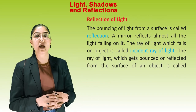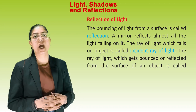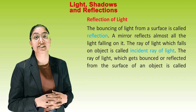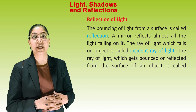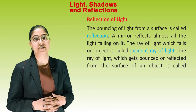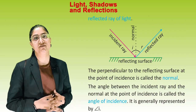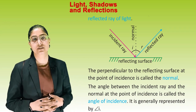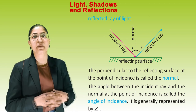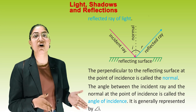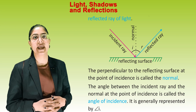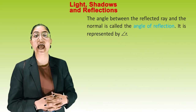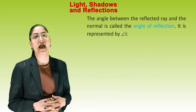Reflection of light. The bouncing of light from a surface is called reflection. A mirror reflects almost all the light falling on it. The ray of light which falls on the object is called the incident ray. The ray which gets bounced or reflected from the surface is called the reflected ray. The perpendicular to the reflecting surface at the point of incidence is called the normal. The angle between the incident ray and the normal is called the angle of incidence, represented by angle I. The angle between the reflected ray and the normal is called the angle of reflection, represented by angle R.